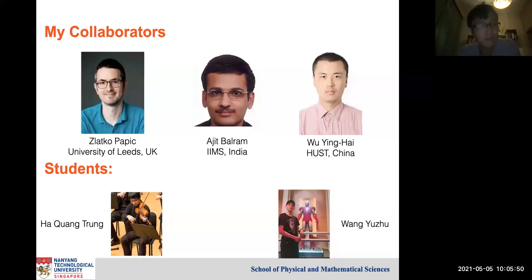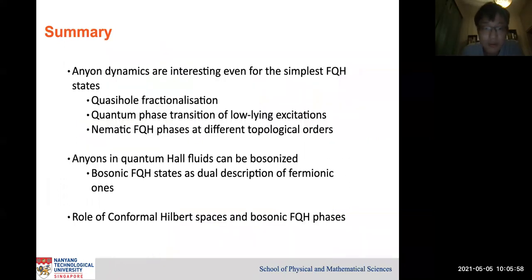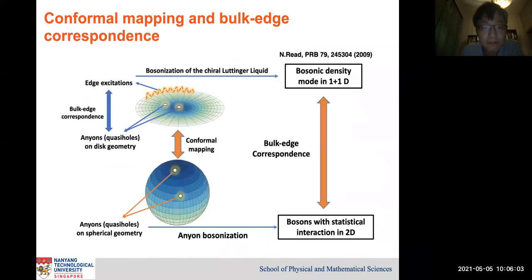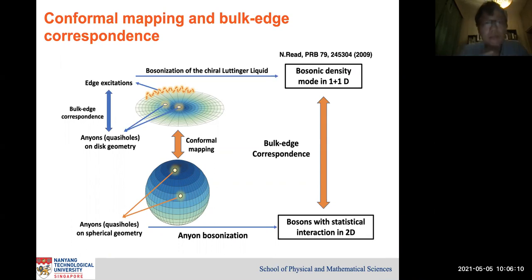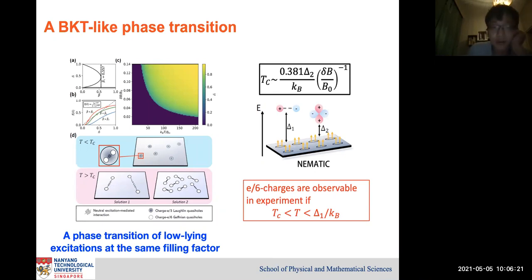I have a question about the second talk. Thank you for the very interesting presentation. At the very end you mentioned bulk-edge correspondence, and this leads me to a question about what happens on the edge. You mentioned that you predict fractionalization of Laughlin quasi-particles, and this connects with the Gaffnian space. Naively, I would think you should have Gaffnian conformal field theory as a universal description of the edge. But the theory is non-unitary, and so it seems problematic. So what actually happens on the edge?